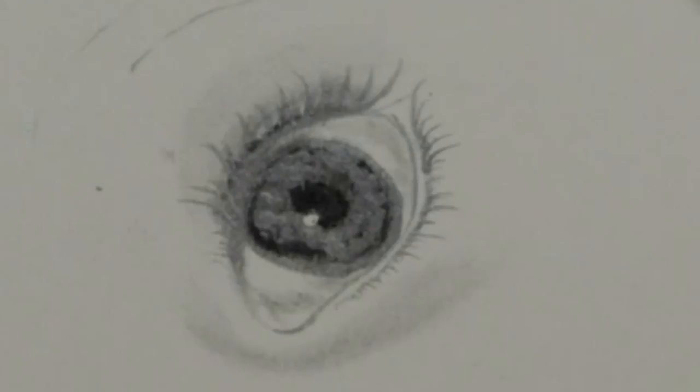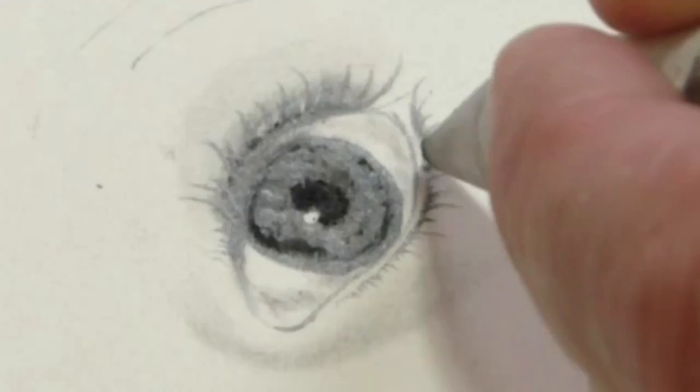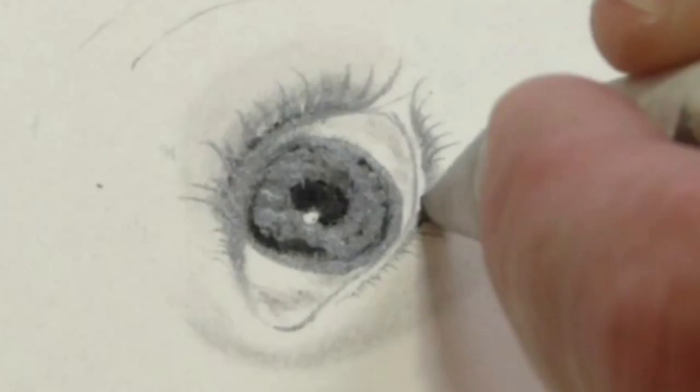So with the paper stump, I don't want to go in quite as heavy. So I'm not going to use the charcoal pencil. Just smudge it slightly there.